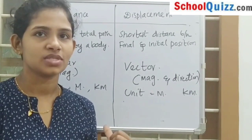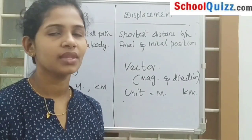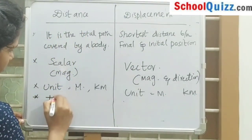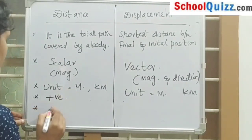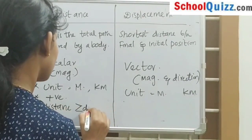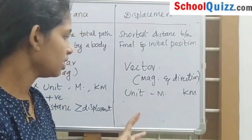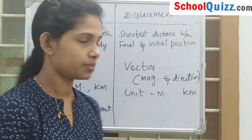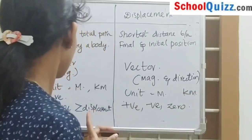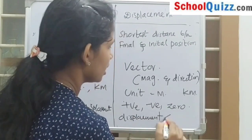Distance is always positive because it measures the total path covered by a body. Distance is always greater than or equal to displacement. Displacement can be positive, negative, or zero. Displacement is always less than or equal to distance.